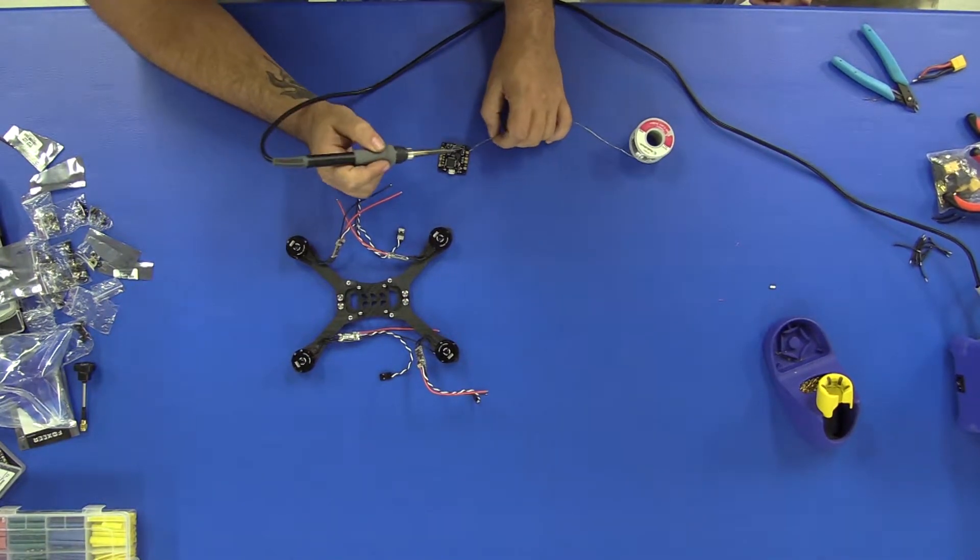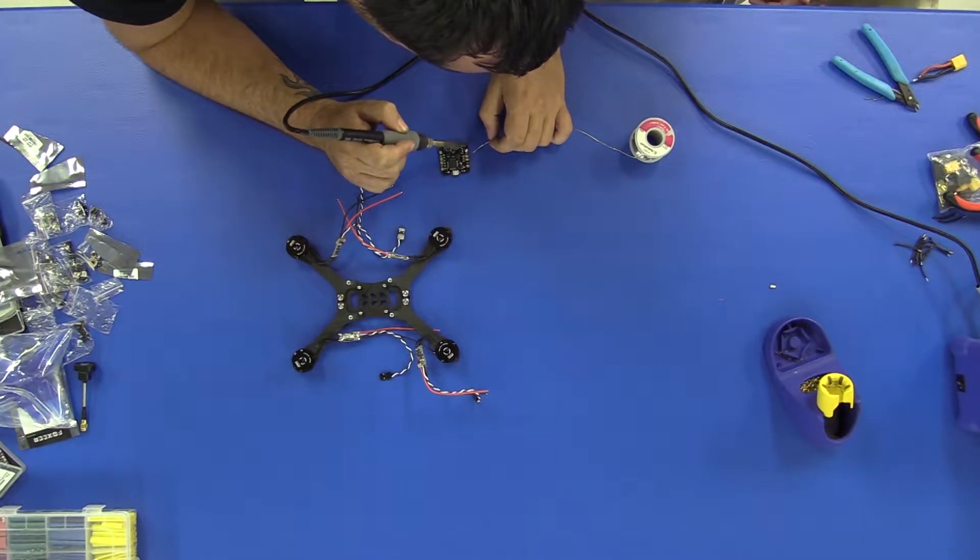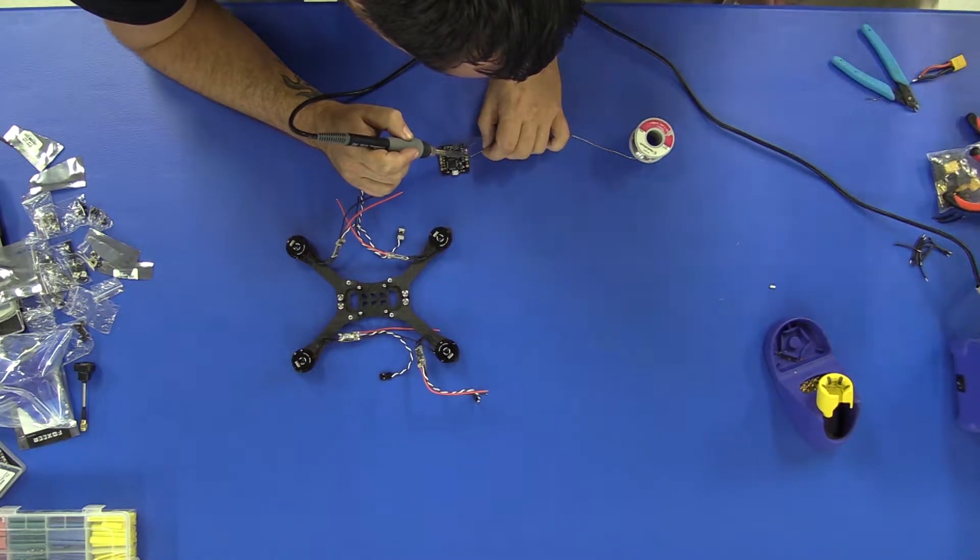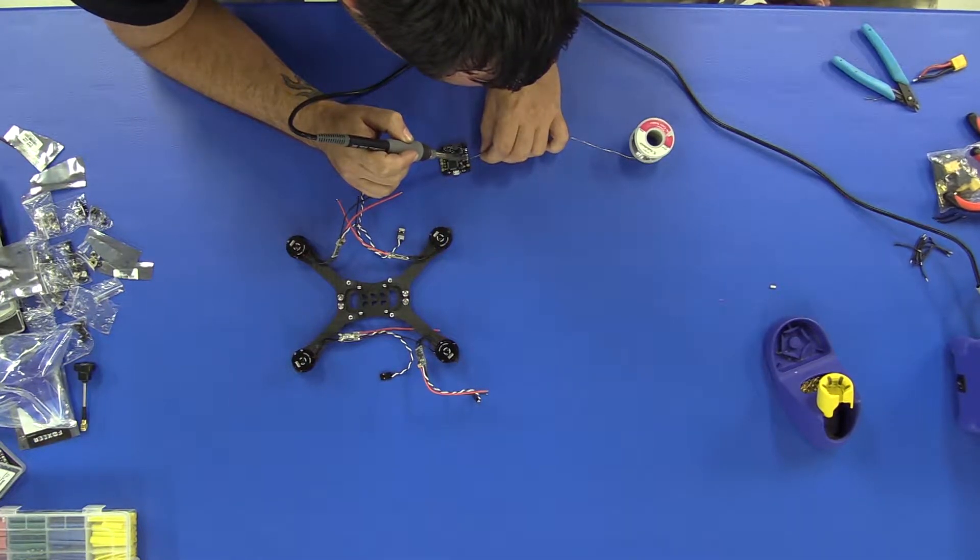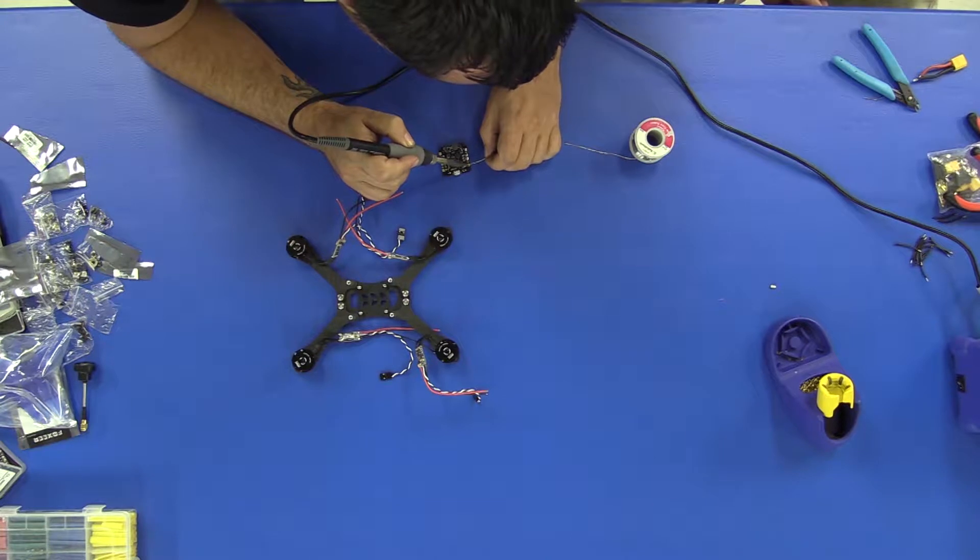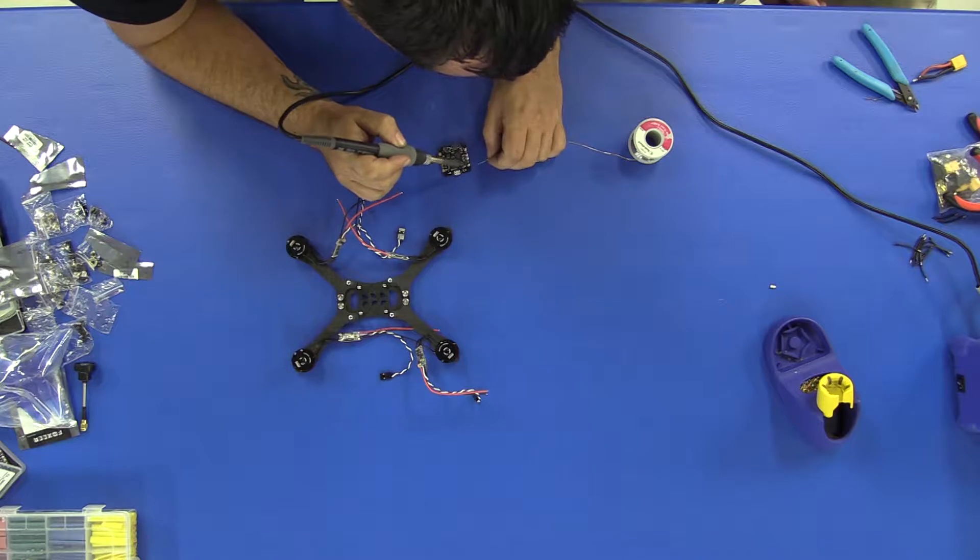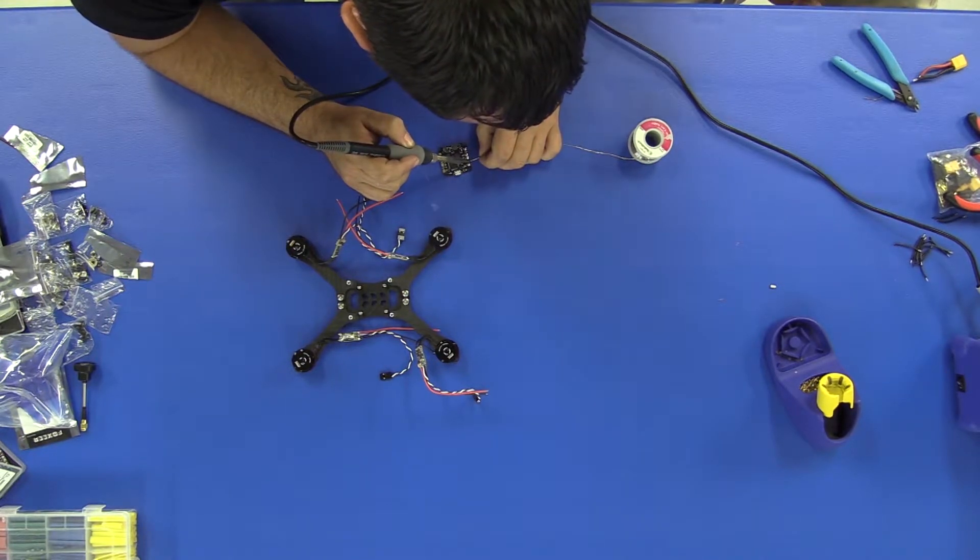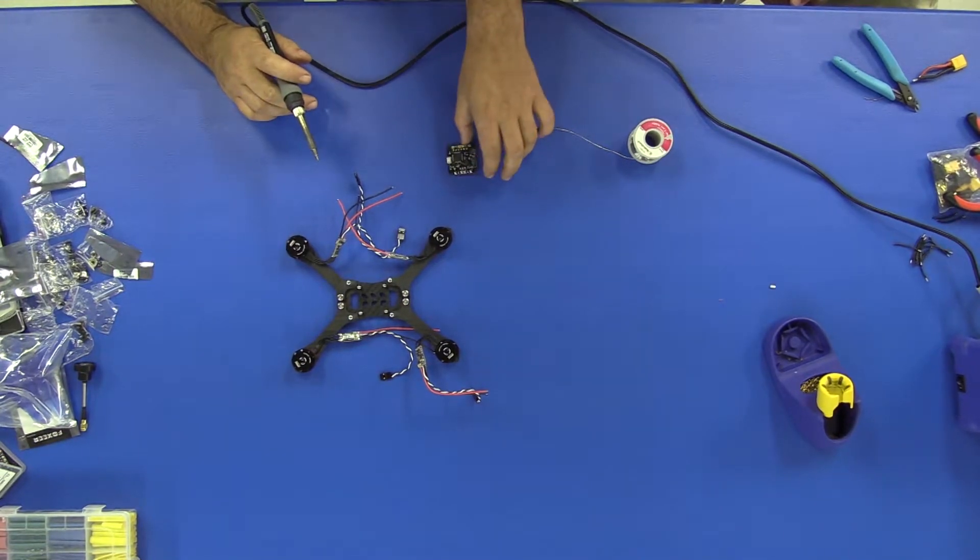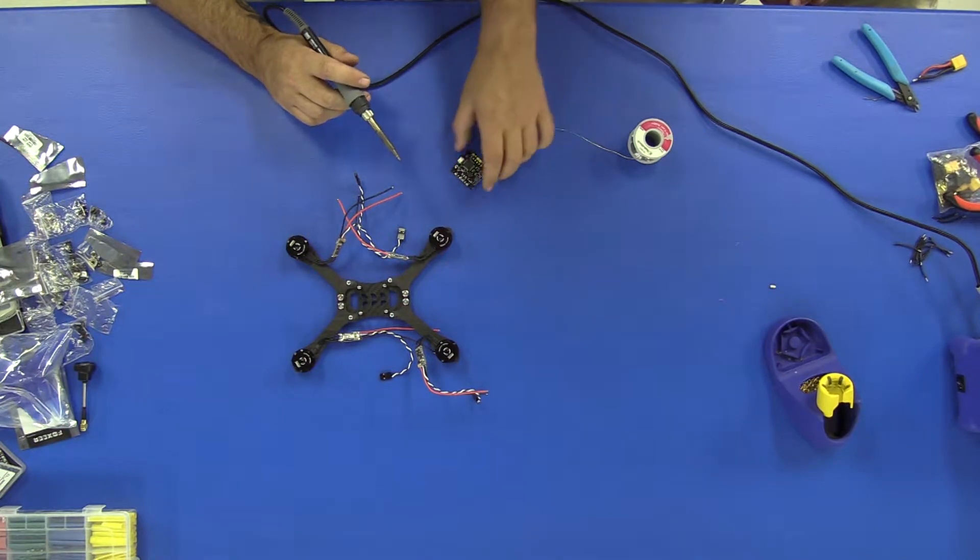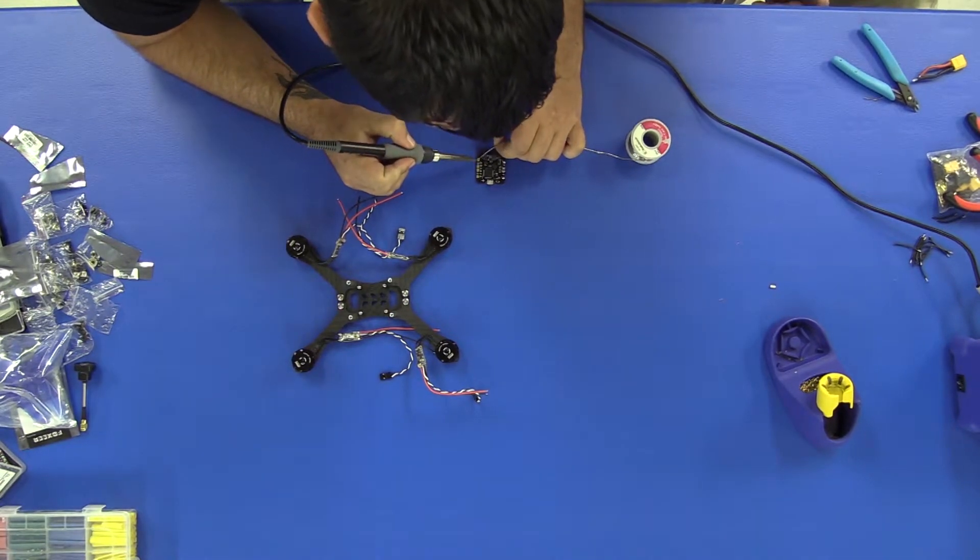You're going to want to go ahead and tin these wires. Guys, be really careful when you tin these wires—you don't want any of this to bridge over. It will cause a short, and as I have learned from experience, this may cause fire. So be very careful.